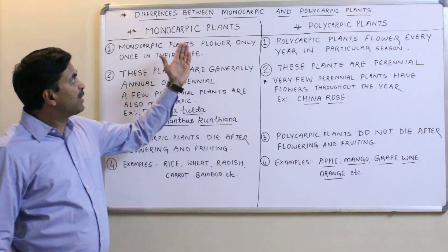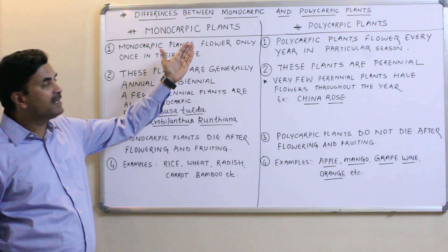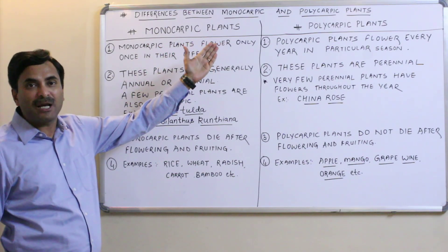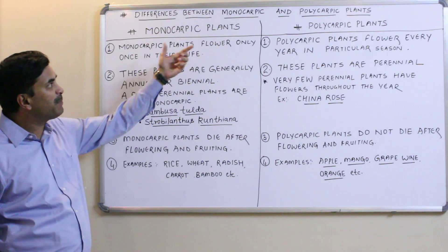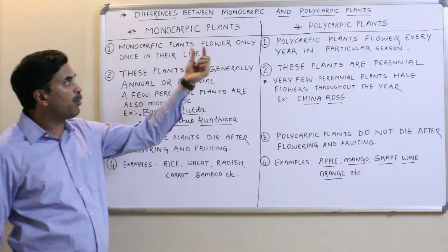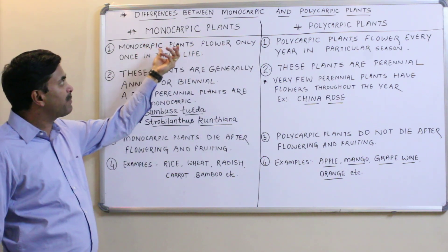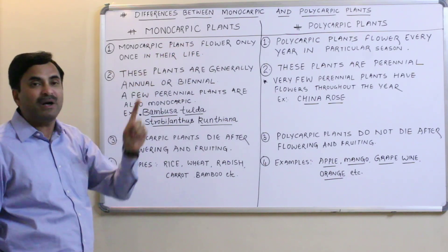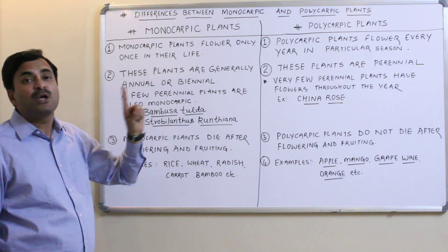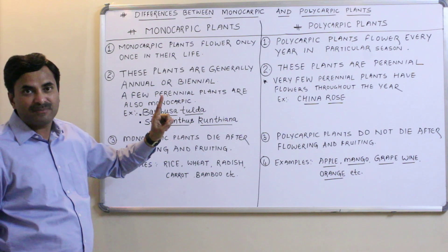Hello to all. Today we are going to differentiate between two categories of plants: monocarpic plants and polycarpic plants. 'Mono' means one, 'poly' means many. Monocarpic plants are plants which flower only once in their lifetime, and that's why they are called monocarpic.